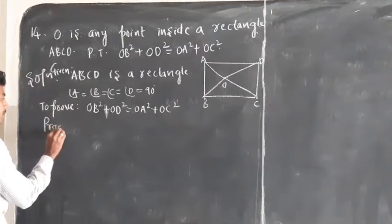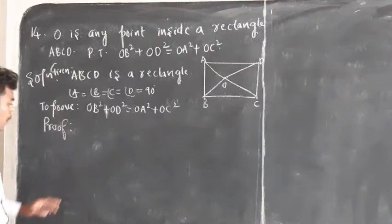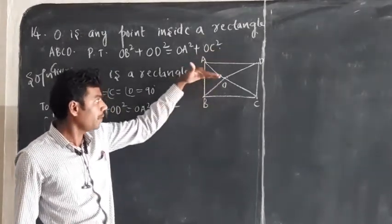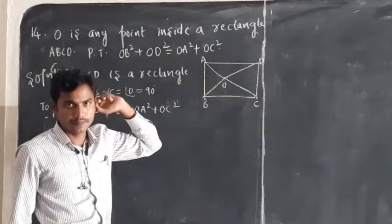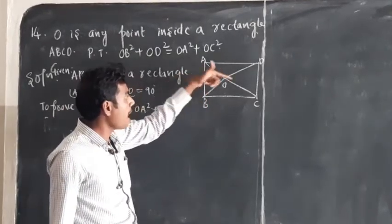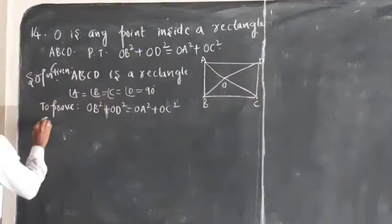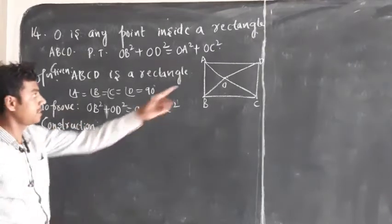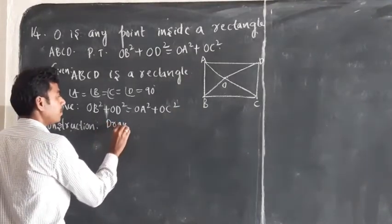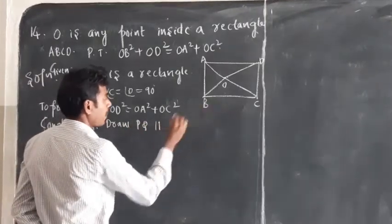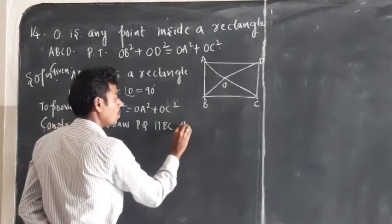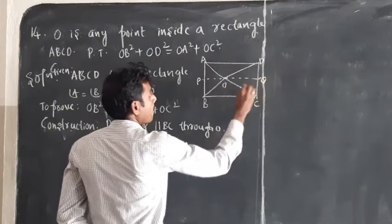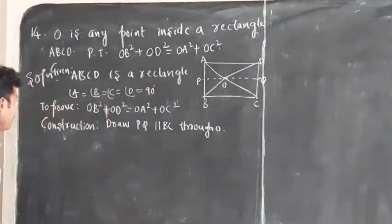For the proof, we need to form triangles so that we can apply Pythagoras theorem. Construction: draw PQ parallel to BC through point O.